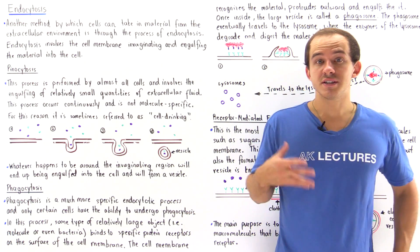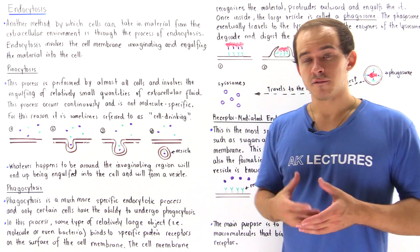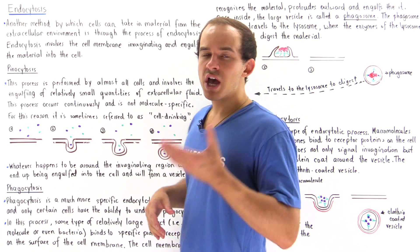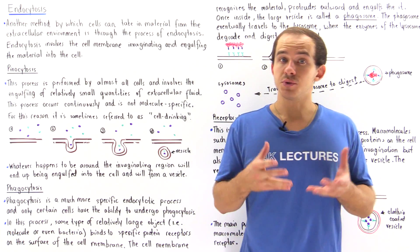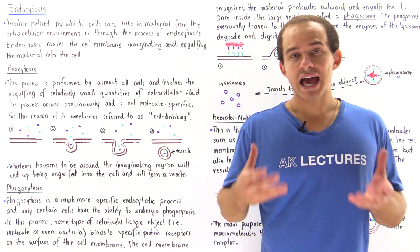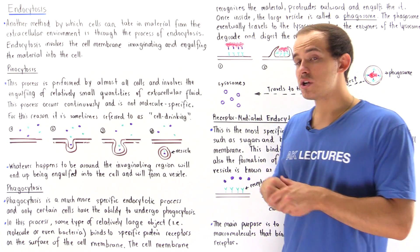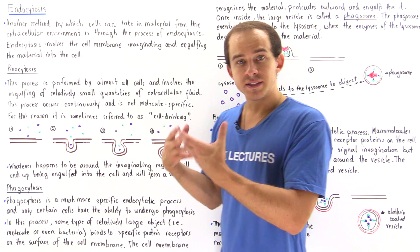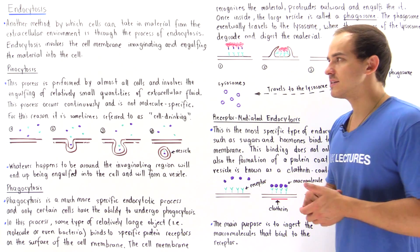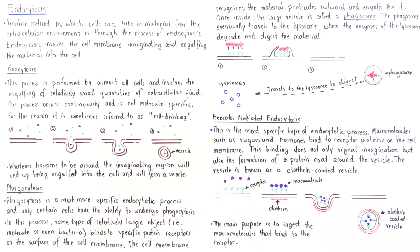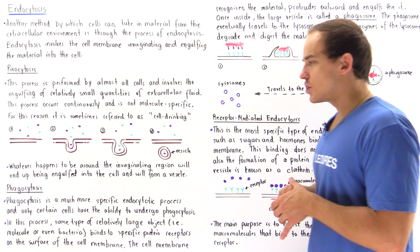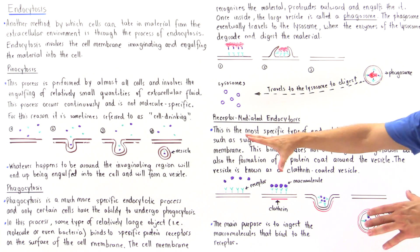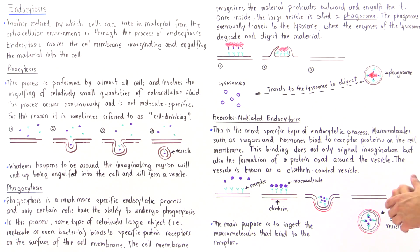Another method by which a cell can uptake material from the extracellular environment is via a process known as endocytosis. Endocytosis requires energy and is the process by which the cell membrane invaginates and engulfs material found outside the cell. There are three different processes of endocytosis: pinocytosis, phagocytosis, and receptor-mediated endocytosis.